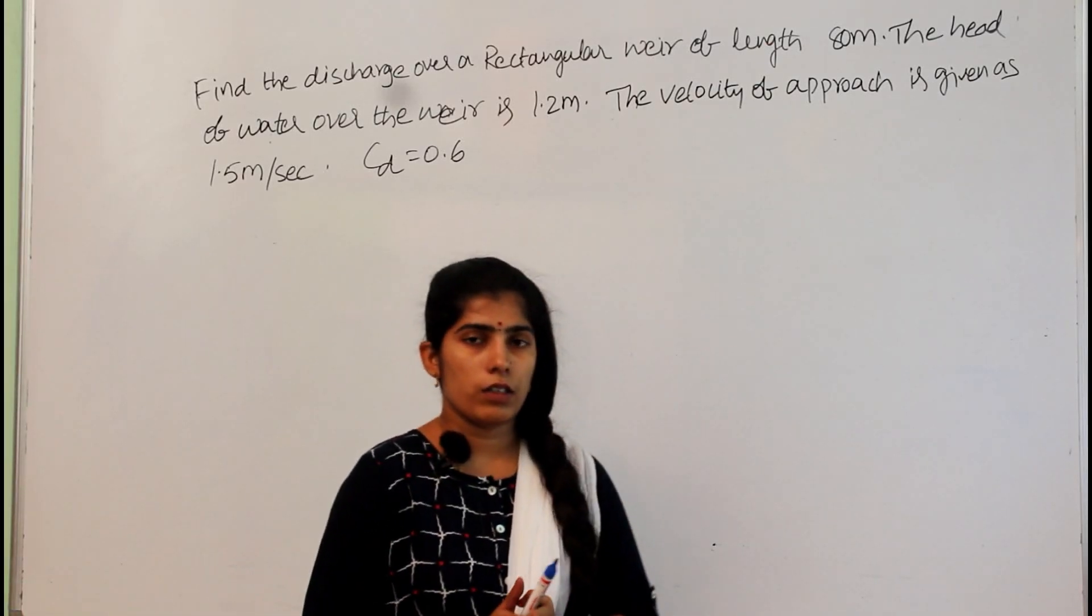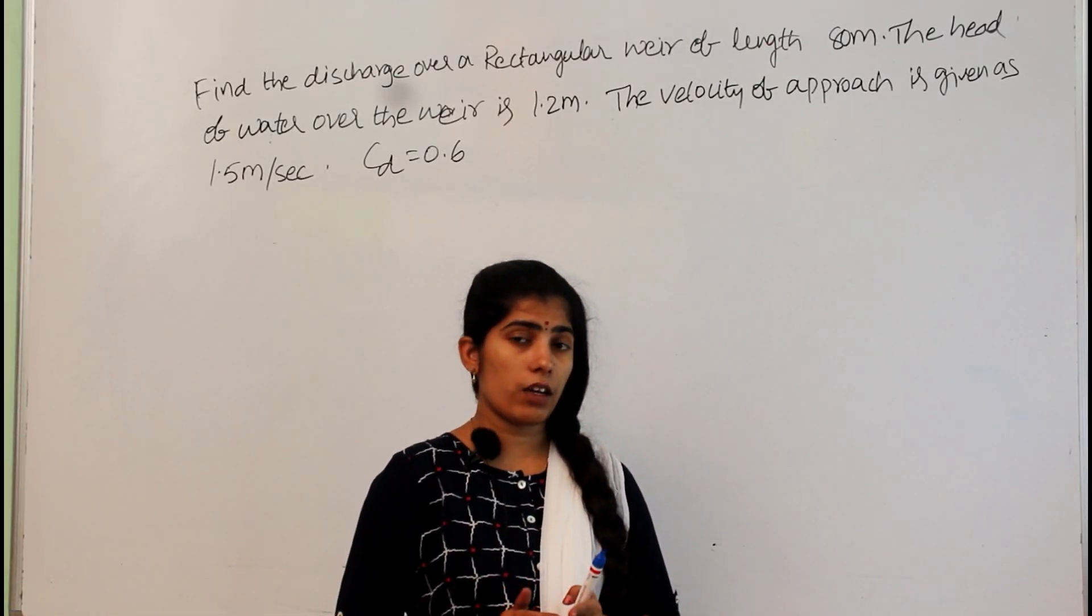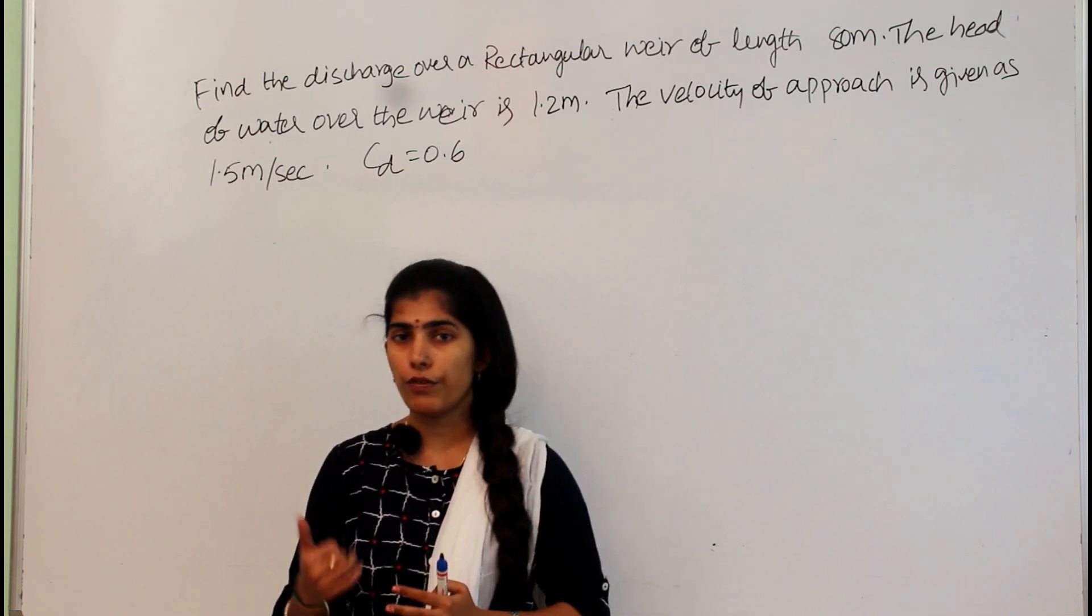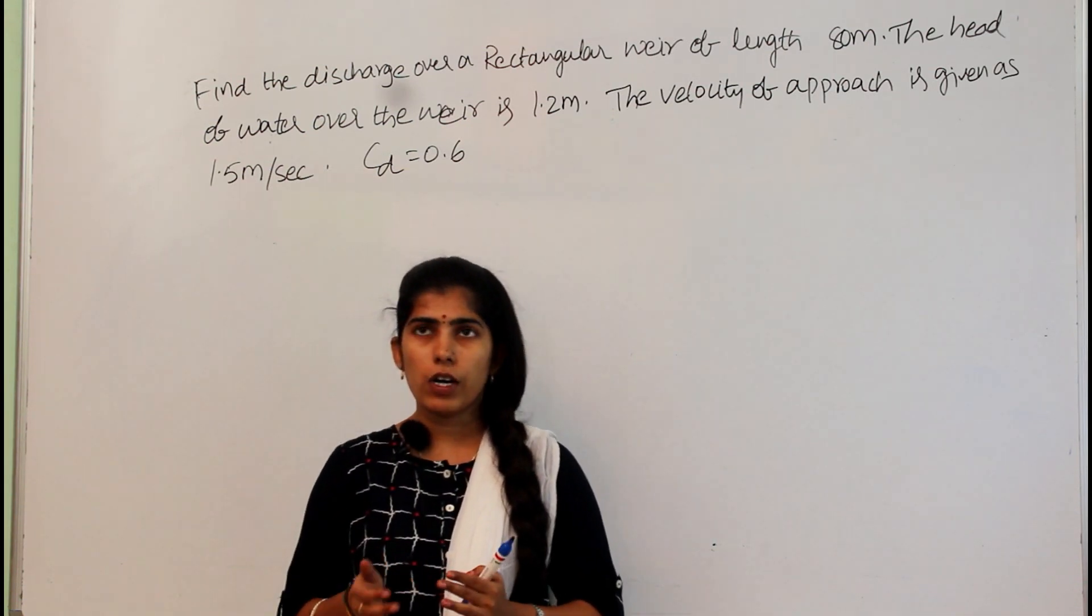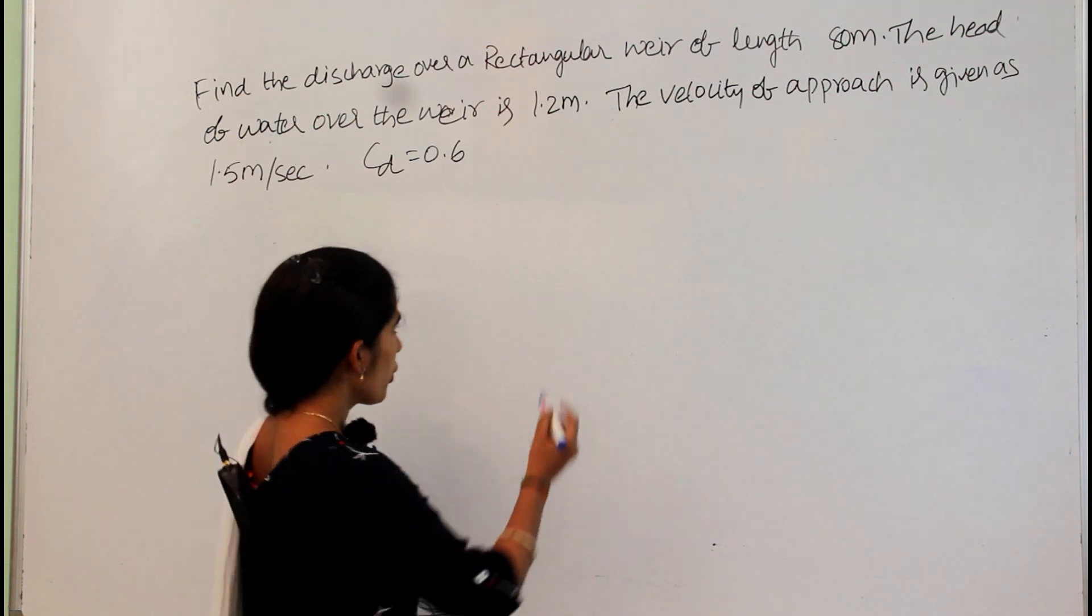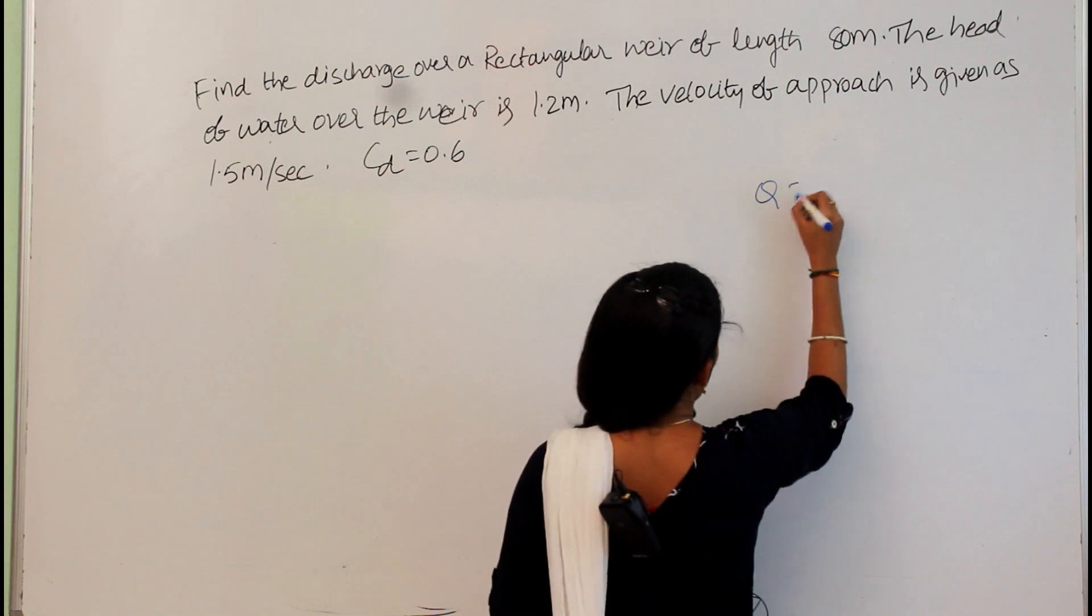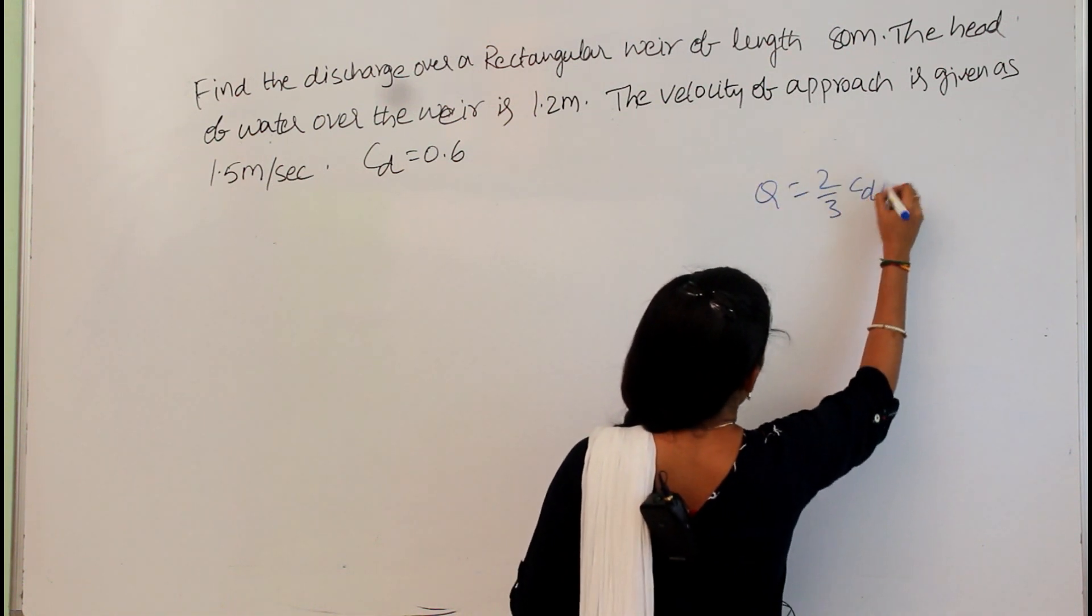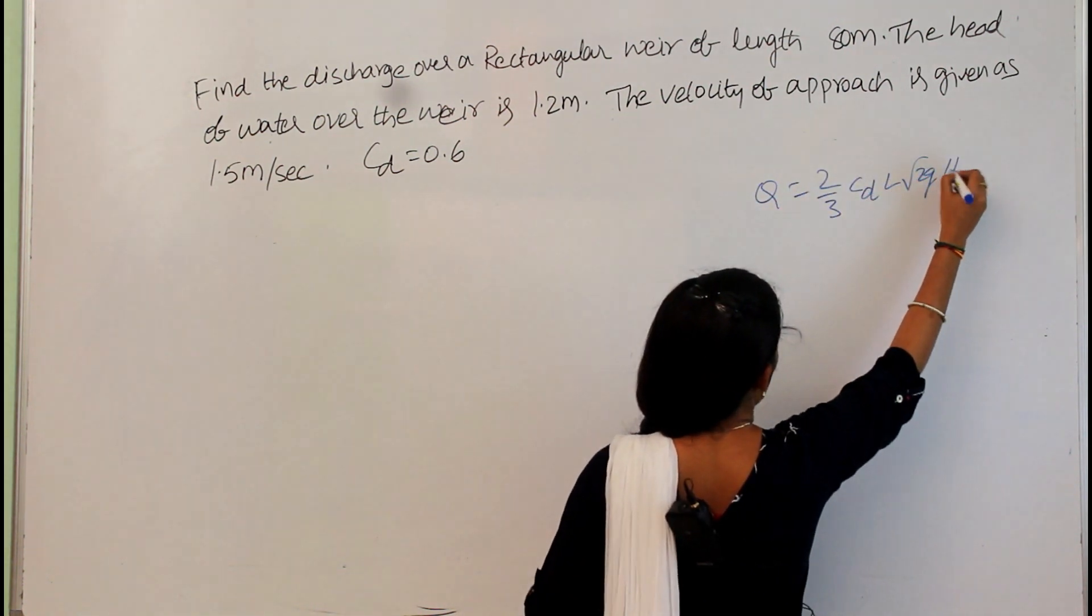Now we will see the discharge equation for the rectangular weir with velocity approach and one problem on that. We already saw the discharge equation for the rectangular weir. It is q equal to 2/3 cdl root 2g h power 3/2.